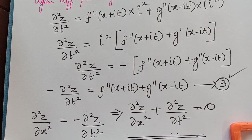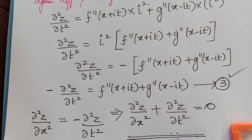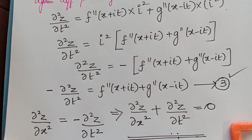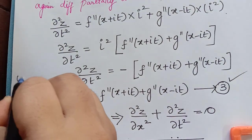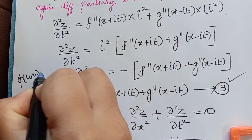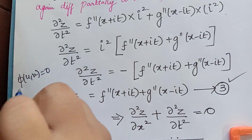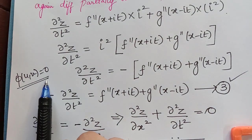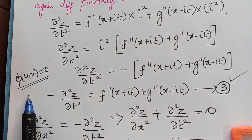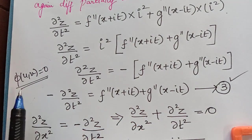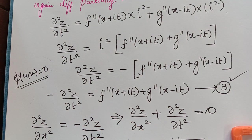Hope you have understood this problem. In our next video, we will find the partial differential equation by eliminating the arbitrary function when the function is given in the form phi(u, v) = 0. In that case, how to find the partial differential equation — that we will be learning in our next video. Thank you.